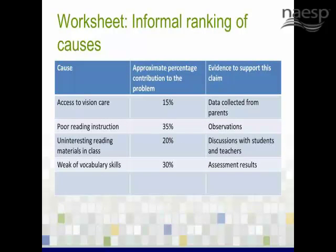The next step that we find particularly helpful is to rank order or estimate the strength or importance of each cause. There's nothing scientific about this — it's simply based on what you know at your site from the evidence you've gathered. But doing this will help you get closer to an understanding of how to move forward. Looking at the table, it makes sense that you would make your first effort to address the needs identified with the heaviest weights, which would be poor reading instruction and weak vocabulary skills. We encourage you to engage others in your school in this type of analysis as a way of helping everyone come to a common understanding about how best to address the problem you have identified.